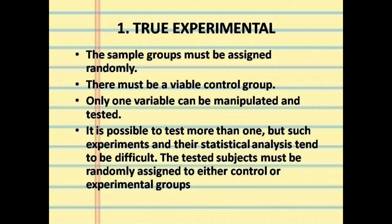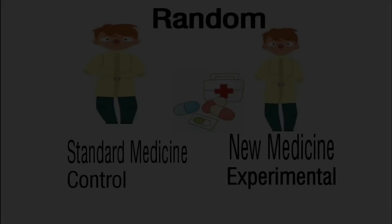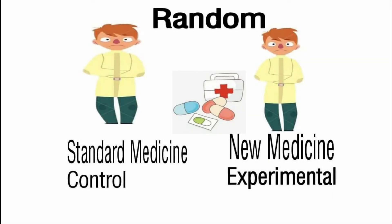viable group. Only one variable can be manipulated and tested — it is possible to test more than one, but such experiments and their statistical analysis tend to be difficult. The tested subjects must be randomly assigned to either a control or experimental group. Look at our sample — we have a patient here.